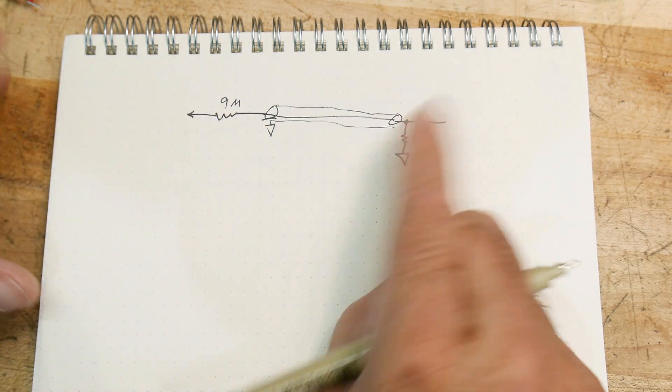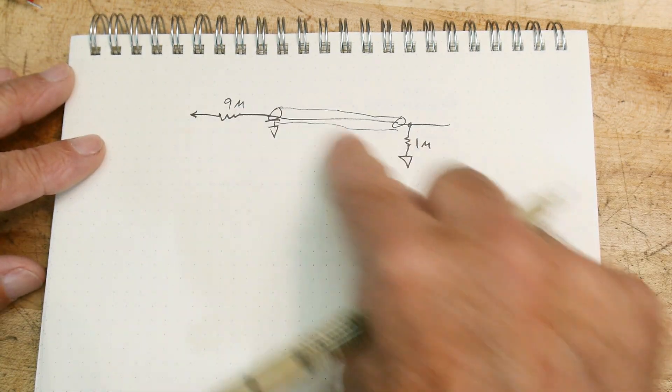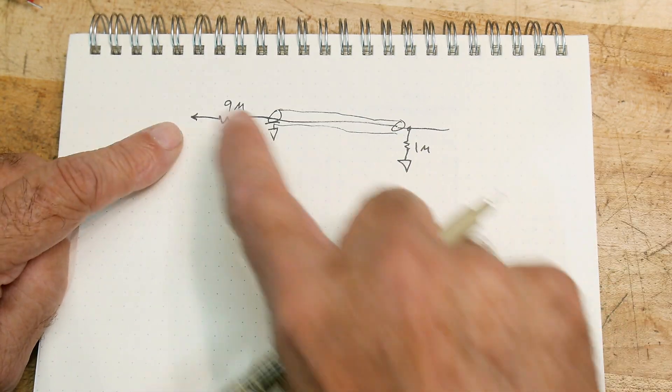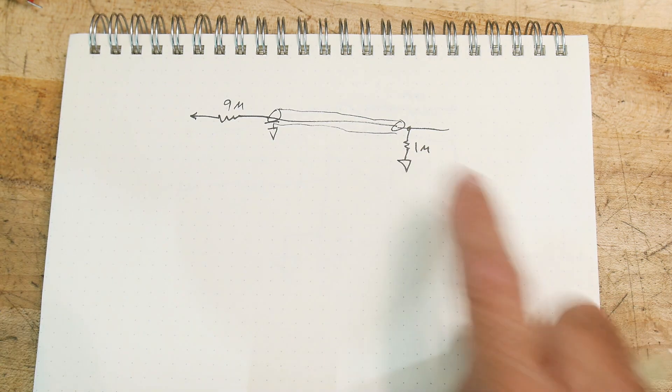And that's our 10 to 1 probe, right? This is a 10 to 1 division. And the total resistance to ground, that's the loading, how much resistance to ground is there, is 10 megohms.